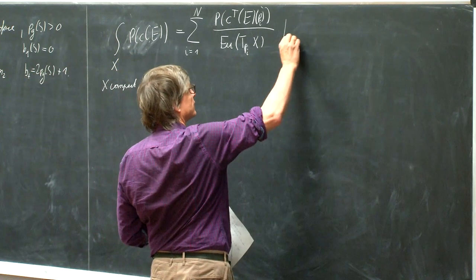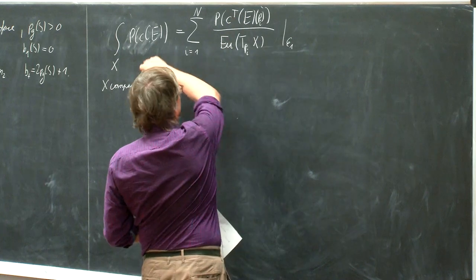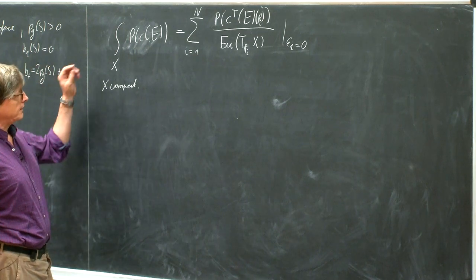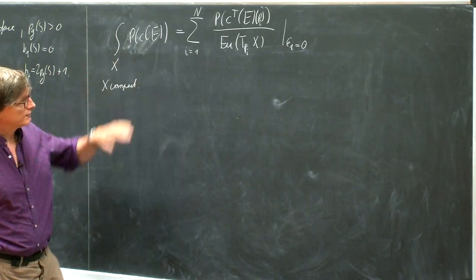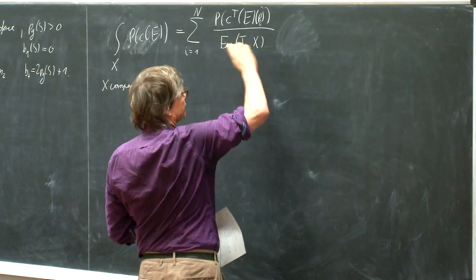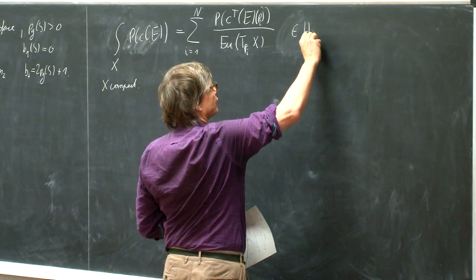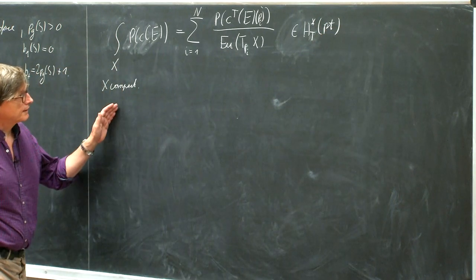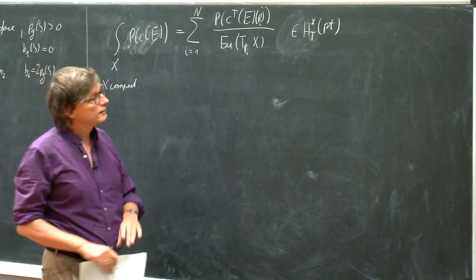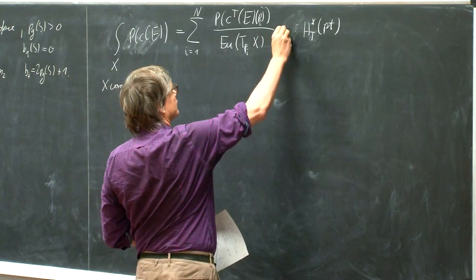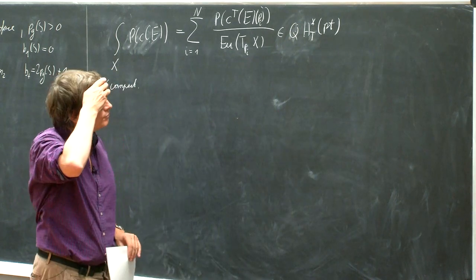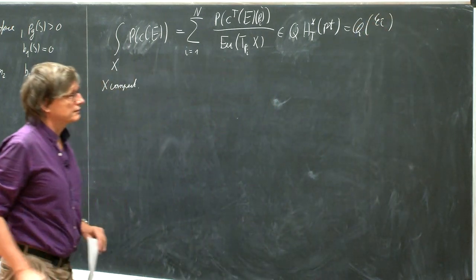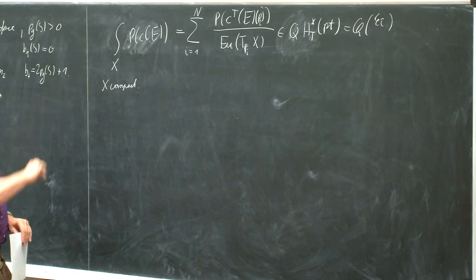If we put epsilon 1, epsilon 2, the equivariant weight of the action, equal to 0. Whether X is compact or not, we can also view this as a pushforward in equivariant cohomology — this would be an equivariant integral in the equivariant cohomology of a point. And if X is not compact, we can also do it; then this sum will only live in the quotient field of equivariant cohomology of a point, which would be some Q fraction field of rational functions in the epsilon_i.